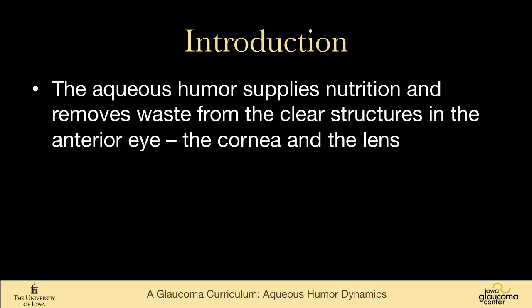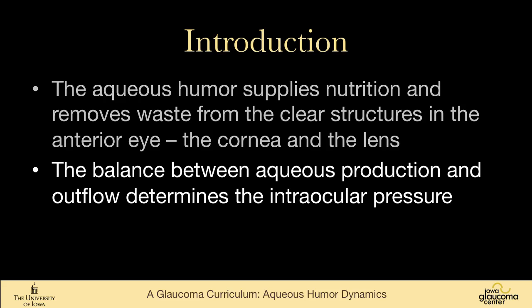We know that the aqueous humor supplies nutrition and removes waste from the clear structures in the anterior eye — the cornea and the lens — structures that really can't have blood vessels going to them. And the balance between aqueous production and aqueous outflow determines the intraocular pressure.